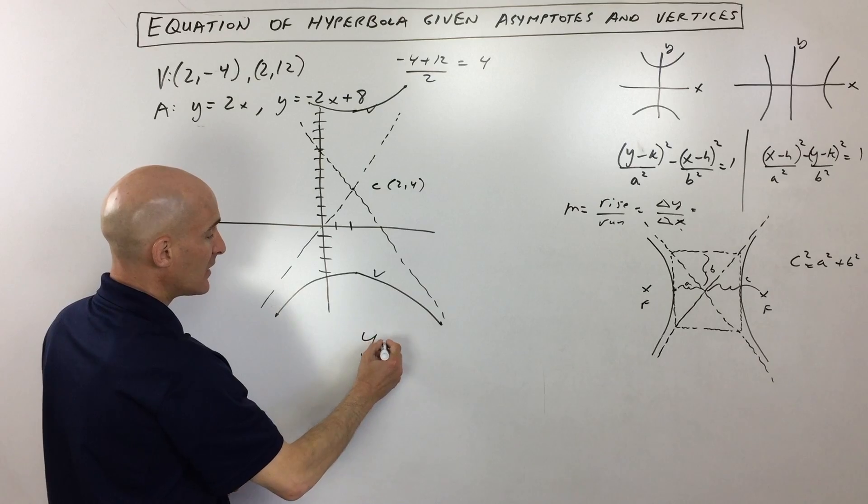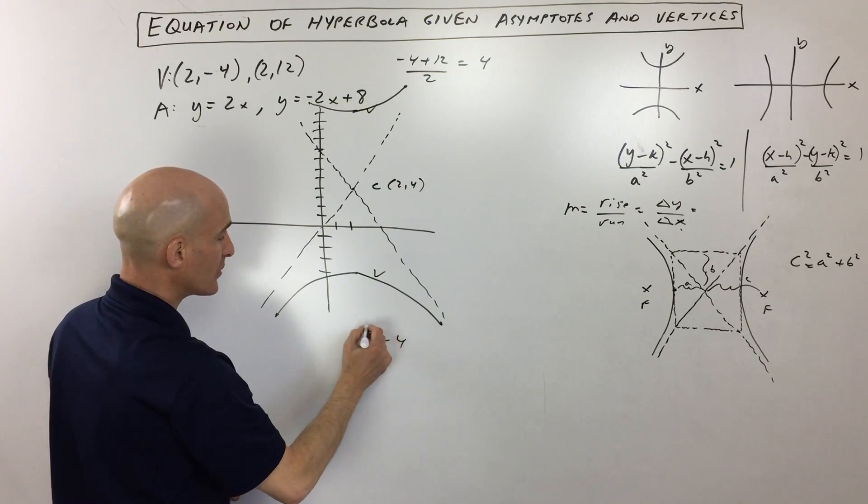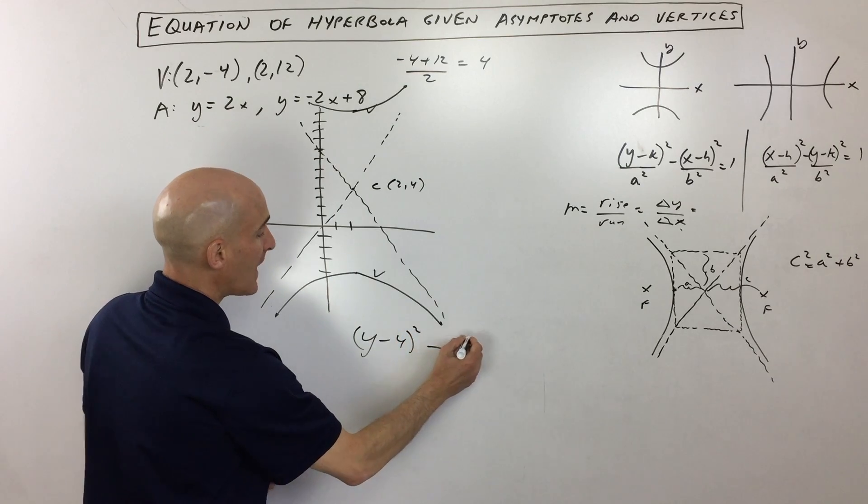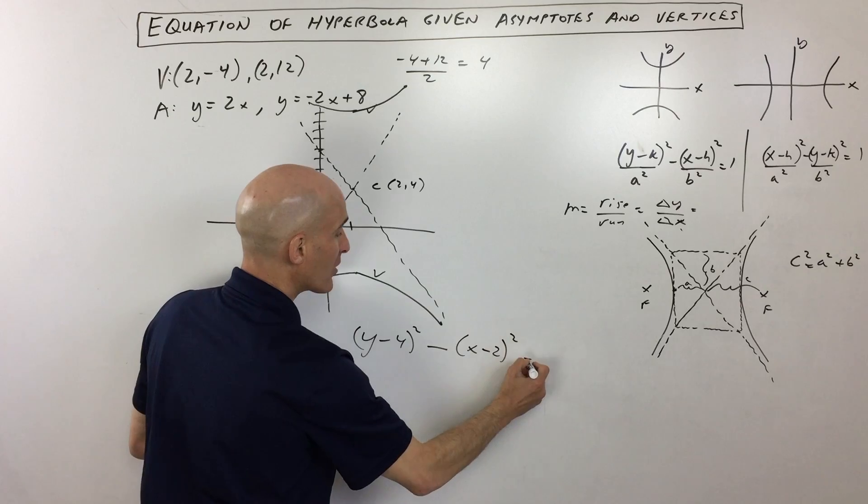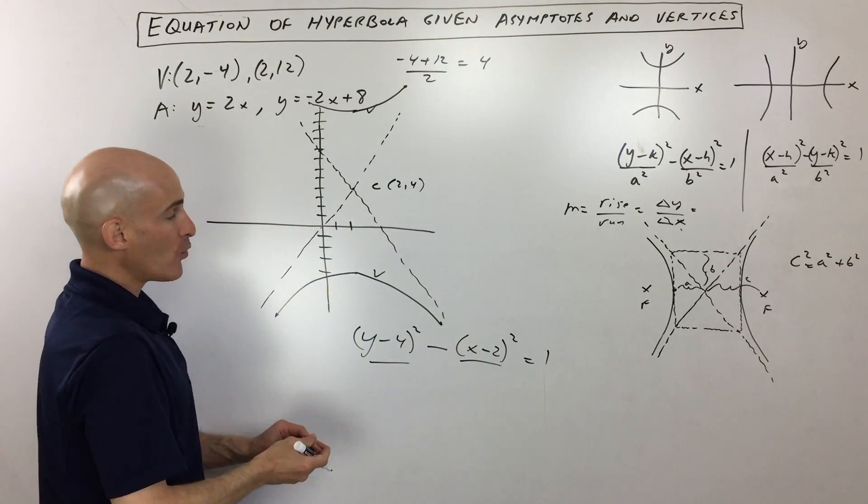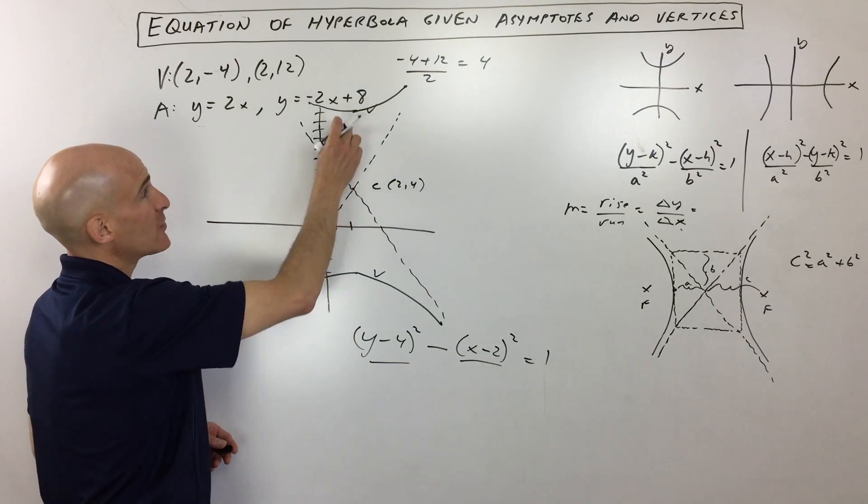So we know it's opening up and down, so that means that we're going to be looking at a hyperbola in this form. It's going to be y minus the y coordinate of the center squared minus x minus the x coordinate of the center squared equals 1. And now what we have to do is find these denominators. We need to find our a squared and our b squared.